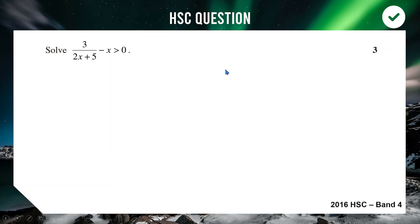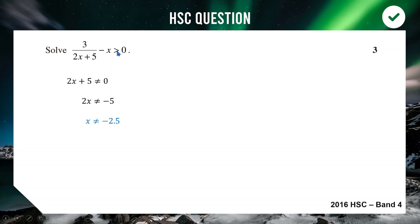The expression has 2x + 5 in the denominator, so 2x + 5 ≠ 0, meaning x ≠ −5/2 = −2.5. That's our first critical value. We then change the inequality to an equation to find the others.